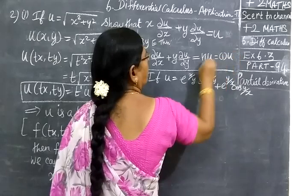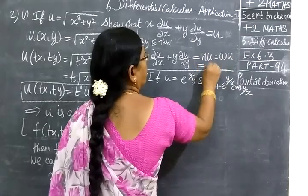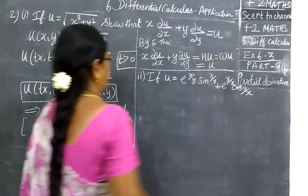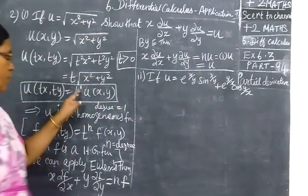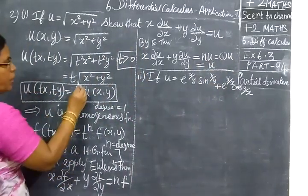Here the degree n equals 1, so 1 into u equals u. That means x into partial u by partial x plus y into partial u by partial y equals u.